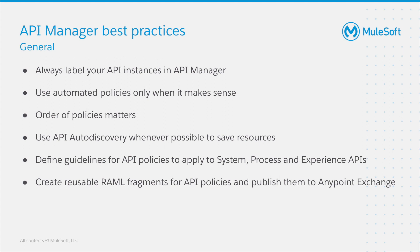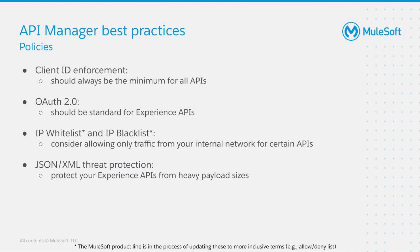The more APIs you're creating, the more important it gets to have guidelines. You should define your own set of guidelines for which policies to apply to which layer of the API-led connectivity approach. We will see one example of such a guideline later on. Another best practice is to create reusable RAML fragments for required API policies and publish them to Anypoint Exchange, so that they can be already applied during design time. Regarding policy-specific best practices: Client ID enforcement should always be the minimum for all of your APIs and applications, to ensure a minimum of access security and make traffic traceable.